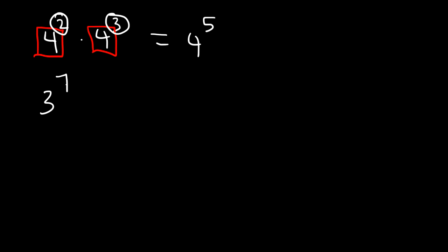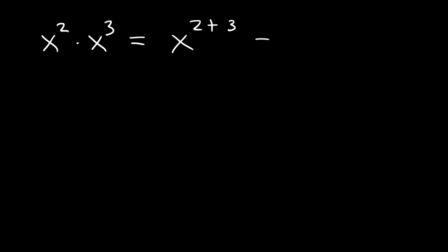Here's another example. 3 to the 7th times 3 to the 4th. All you need to do is add 7 plus 4. 7 plus 4 is 11. So this is 3 to the 11th. Another example is x squared times x cubed. This is going to be x raised to the 2 plus 3, which is 5.